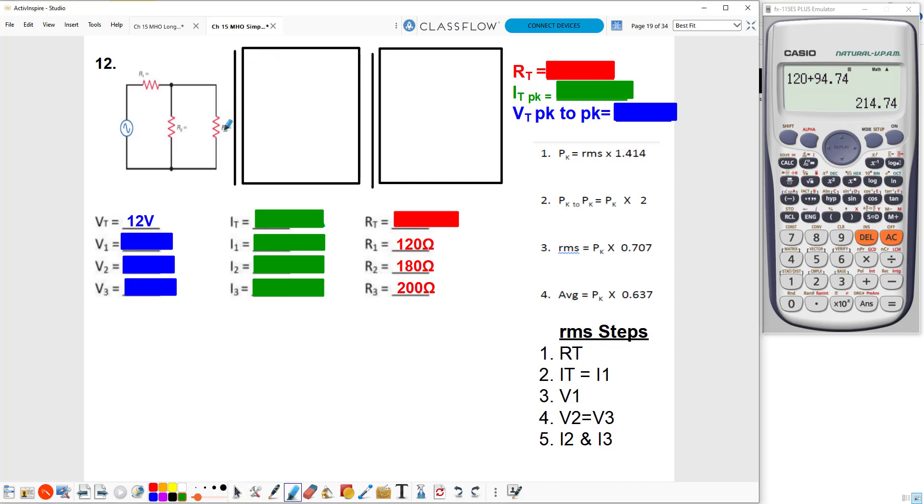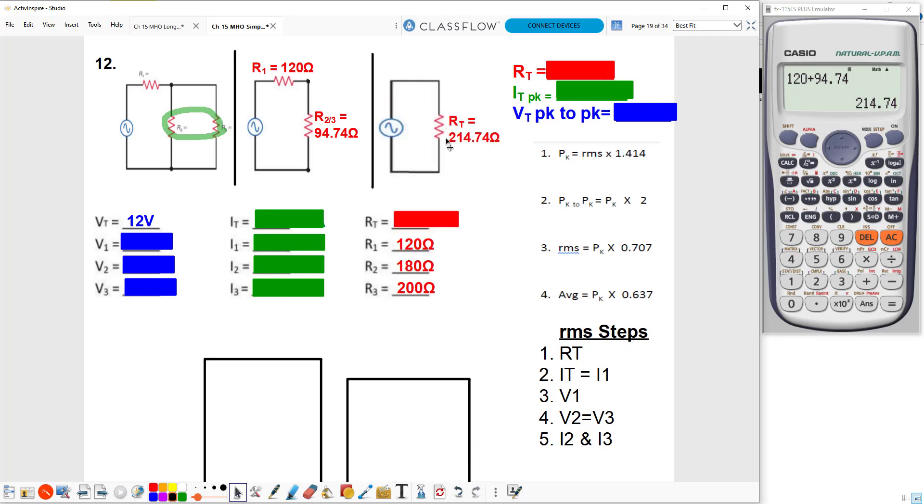Looking at the circuit here, I see that I have R2 and R3 in parallel with each other. So when I do my first redraw, I'm going to bring R1's value straight over, leave it at 120, and I'm going to use the reciprocal formula for R2 and R3 because they are in parallel with one another. This leaves me with two resistors in series. What do we do with resistors in series? We add them together. So this leaves me with a total resistance of 214.74 ohms.